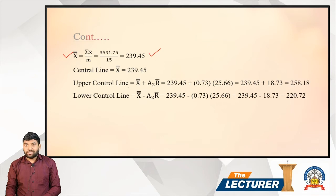Next we find the central line. The central line for the X-bar chart is equal to X double bar, which is 239.45.